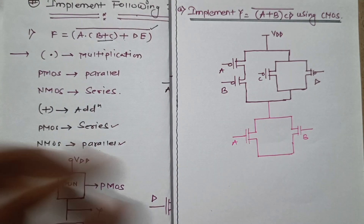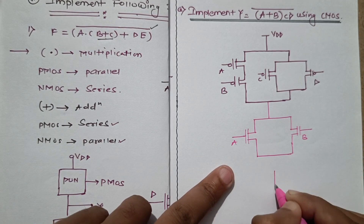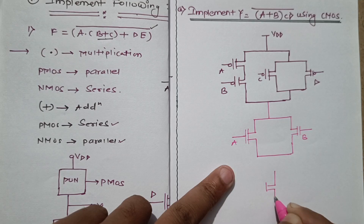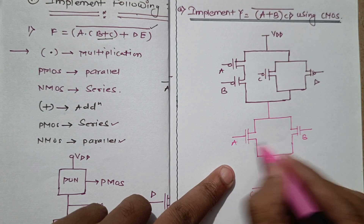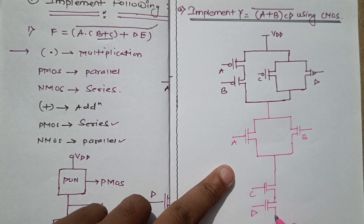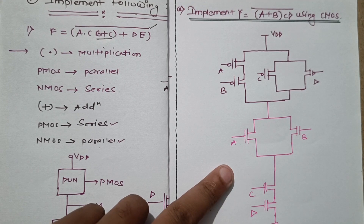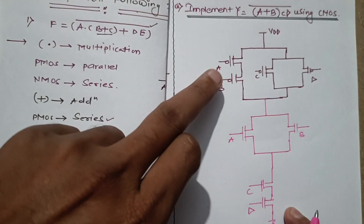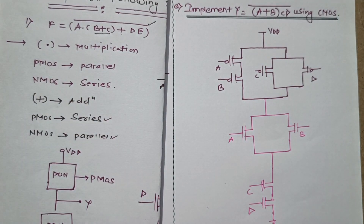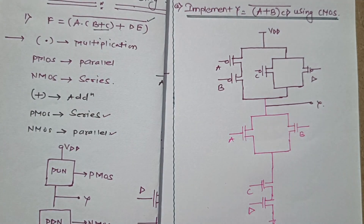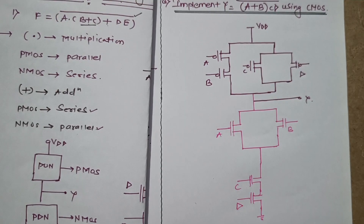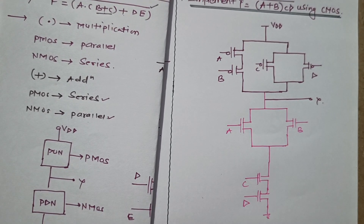Next, A plus B is in multiplication with C and D. For multiplication, NMOS will be connected in series, so we draw C and D in series with each other. This CD combination is in series with A and B, and we ground this. The output is taken at the center between PMOS and NMOS — this is our output Y. This completes the implementation of the given function using CMOS. I hope you are really getting these examples. Thank you.